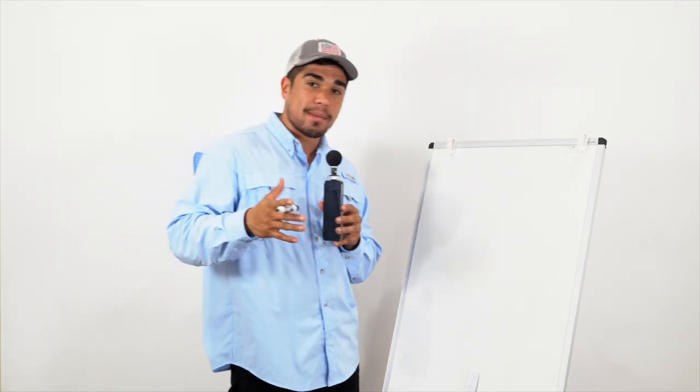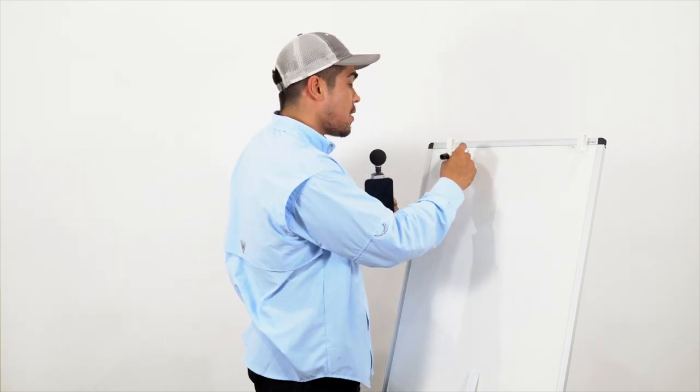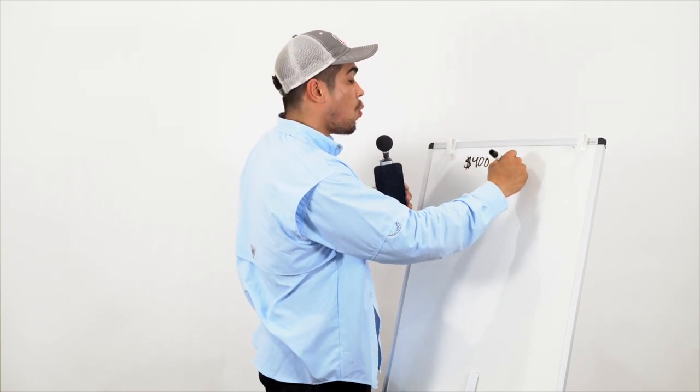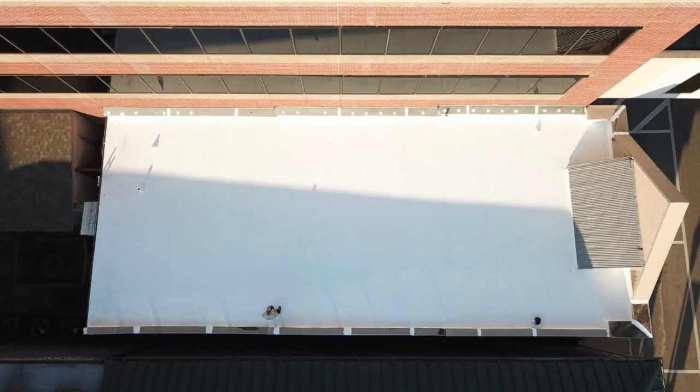I'm going to try to make this video as short and simple to the point so I don't waste your time. Right now for the Houston, Texas area you're looking to pay between $400 to $1,200 per square. This is for a TPO roof.